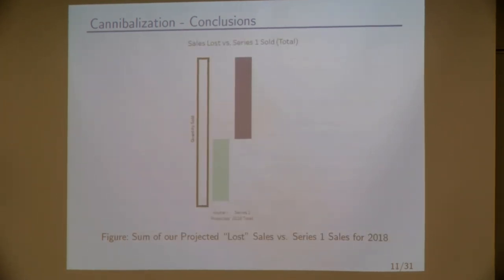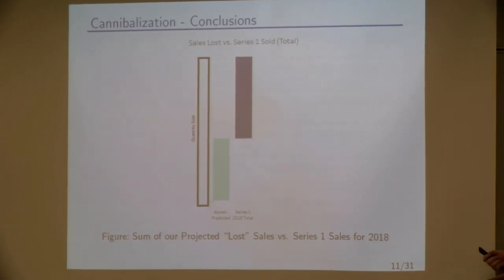And then this bar graph compares what we projected was lost in total in number of chairs sold. And then on the bar on the right is how many chairs of Series 1 were sold in 2018. So as you can see, well, we had to kind of block out the quantities for legal reasons, but we projected that Series 1 sold a little bit more than the total lost sales for the other five chairs.